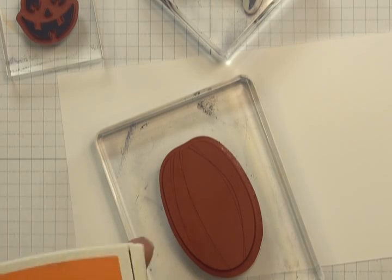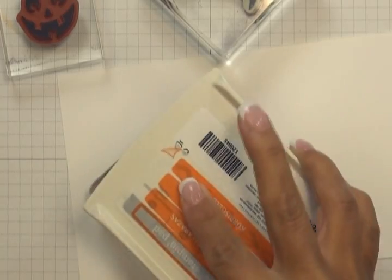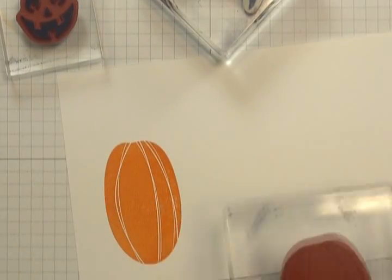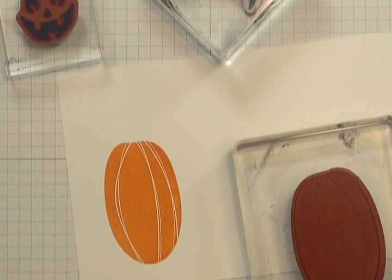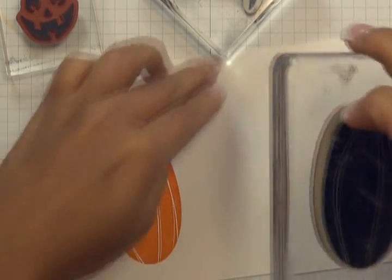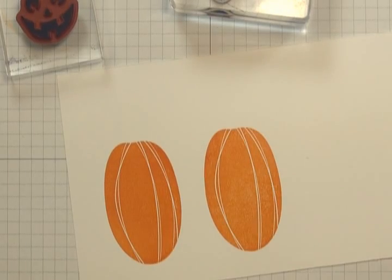I'm going to start with a scrap of Whisper White cardstock. I'm going to ink up my pumpkin in Pumpkin Pie Classic Ink. I'm going to stamp it twice onto my scrap of Whisper White cardstock.